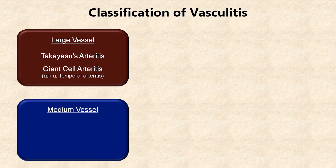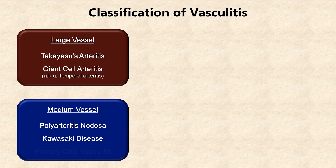Medium vessel vasculitis includes Polyarteritis Nodosa, which is the most widely distributed within the body of the vasculitides as it can affect any organ. Kawasaki disease affects almost solely young children and is best known for causing coronary artery aneurysms, and Primary CNS vasculitis, infamous for mimicking all kinds of primary neurologic and psychiatric disease.